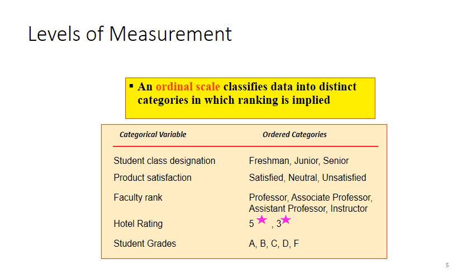The next level is the ordinal scale, which classifies data into distinct categories, and the important thing here to know is that ranking is implied. One of the reasons why gender is not an ordinal scale is because we don't say that the females are better than the males or the males are better than the females, they're all equals. But as you can see from the categorical variable here, in terms of ordinal scale, you have student class designation, product satisfaction, faculty ranking, hotel rating, and student grades with all these as your possible values. You notice from the nominal down to the ordinal, you add on the rank.